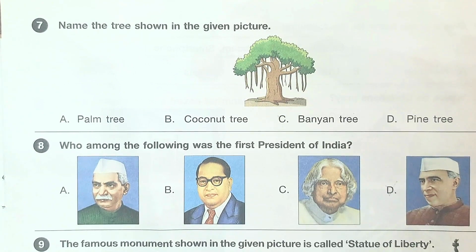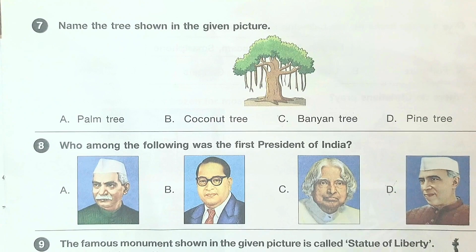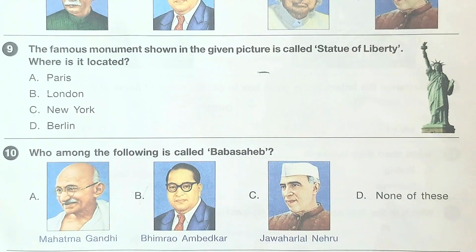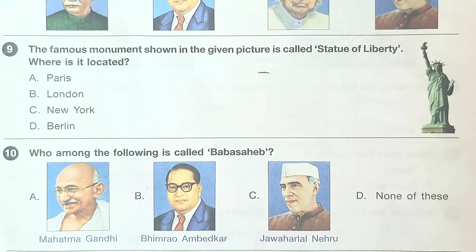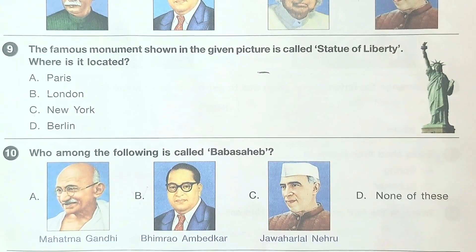Eighth question: who among the following was the first president of India? The answer is option A, Rajendra Prasad. Question 9: the famous monument shown in the given picture is called the Statue of Liberty — where is it located? The answer is option C, New York. Question number 10: who among the following is called Baba Sahab? The answer is option B, B.R. Ambedkar.